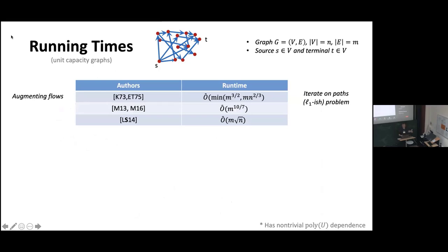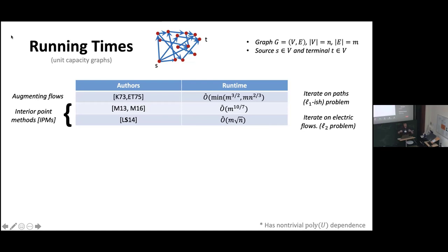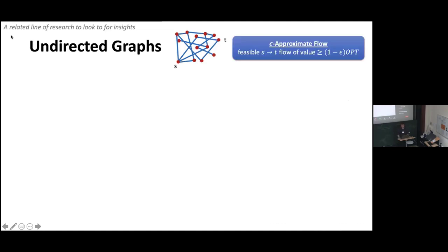Given a new nearly linear time global primitive for processing graphs, a natural thing to try is to use it to solve the maximum flow problem. We can think of these undirected flow problems as a lens for thinking about advances on maximum flow. Classic combinatorial algorithms are sort of using L1-ish procedures repeatedly to solve the L-infinity max flow problem. Interior point methods, in a very strong sense, are iterative methods using these L2 flows to solve the L-infinity problem.